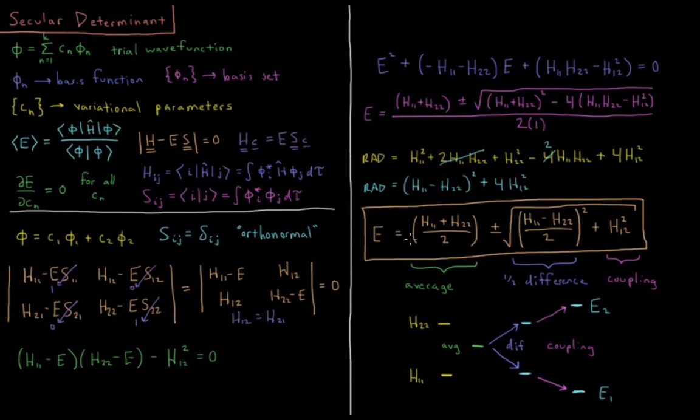This first term, h11 plus h22 over 2, that's the average of h11 and h22. If these basis functions are orthonormal, h11 is the energy of state 1, of phi 1. h22 is the energy of phi 2. So this term in green is the average of those two states.